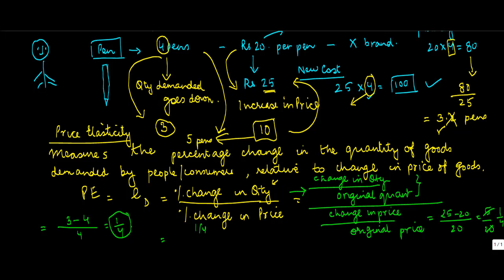So, this will be 1 upon 4, upon 1 upon 4 is equal to 1, but this is negative. So, this is negative elasticity. So, elasticity of demand is 1, which means that with the change in price, with the increase in price, the quantity demanded fell proportionately.